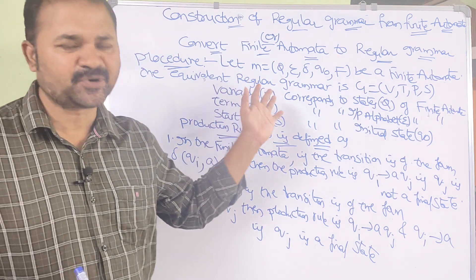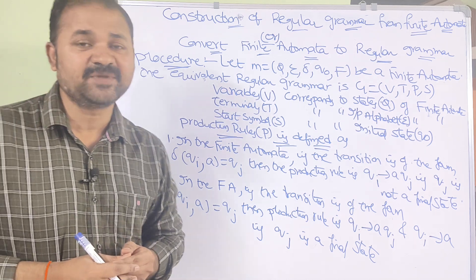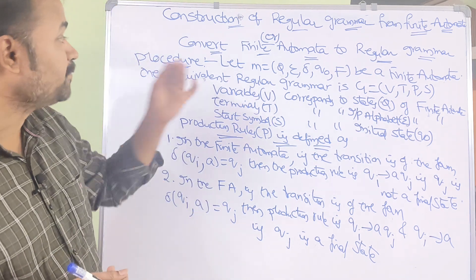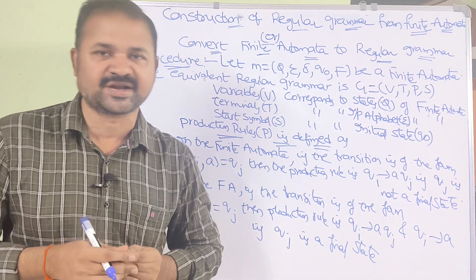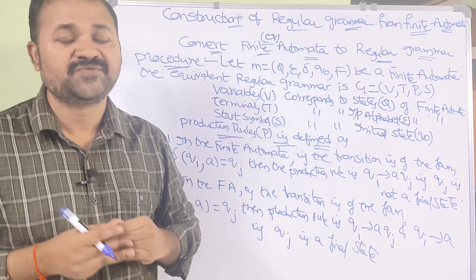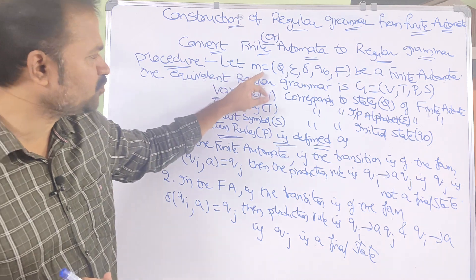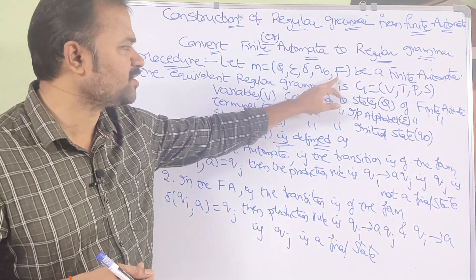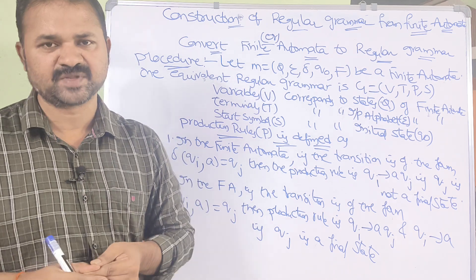The procedure is very important. In the examination, the question may be given: explain the procedure to convert finite automata to regular grammar. So here the input is finite automata. Let M equal to (Q, sigma, delta, q0, F) be a finite automata.